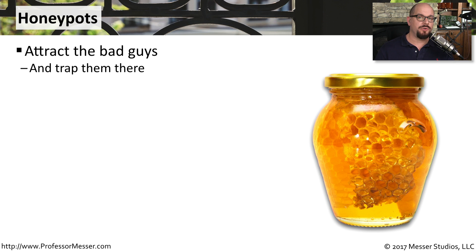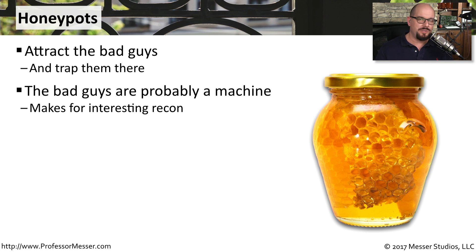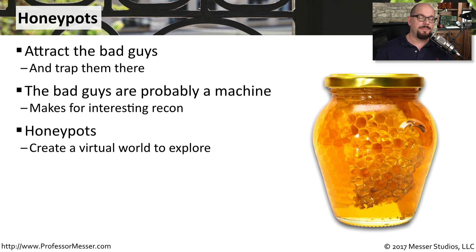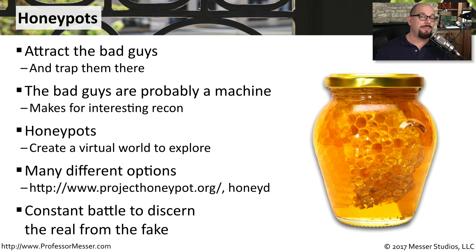Instead of having the bad guys come across the internet and try to break into our own systems, why not set up a system for them that is very attractive and that they could spend a lot of time trying to break into? This is a honeypot — you're attracting these automated systems that are trying to find a vulnerable device. They're usually just performing reconnaissance, so we put a honeypot in place to catch all of that reconnaissance. Some honeypots allow you to build entire virtual infrastructures — servers and networks that look like an entire company to the bad guys. ProjectHoneypot.org and HoneyD are two good examples. The bad guys are also looking out for honeypots, so it's a battle to build one that looks real enough that they can't recognize they've been trapped.